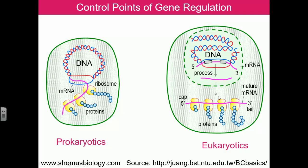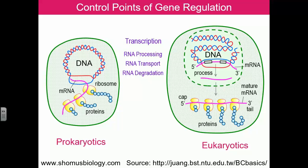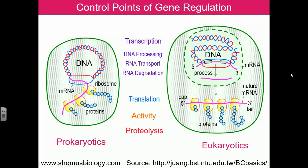Mature mRNA is then transported into the cytoplasm and translated into proteins. The range of regulation differs: for prokaryotes, there are fewer steps involved, so fewer regulation points, while in eukaryotes, multiple steps mean regulation is more extensive and tightly controlled. Regulation occurs at transcriptional, post-transcriptional, RNA processing, RNA transport, and degradation stages.